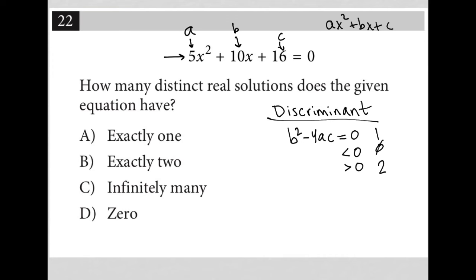So when I plug this in, instead of b squared, I'd have 10 squared minus 4 times a, which is 5, and c is 16. So this becomes 100 minus 4 times 5 is 20. 20 times 16 is 320. So this becomes minus 320.